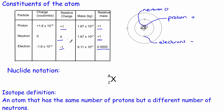These are the numbers used at GCSE, and there will be times at A-level when we'll also use these. However, it's more common to use the actual values for the charge and for the mass. Mass is measured in kilograms, and the mass of one proton is 1.67 times 10 to the minus 27 kilograms. A neutron and a proton have essentially the same mass, so the mass of a neutron is also 1.67 times 10 to the minus 27 kilograms. Electrons are much lighter — the mass of an electron is 9.11 times 10 to the minus 31 kilograms.